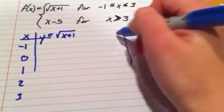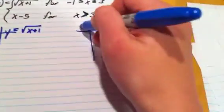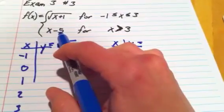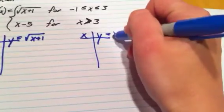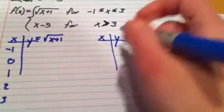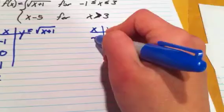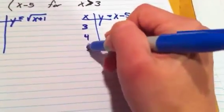And for this other guy, I'll have an x and y is going to be x minus 5 for, so y is going to be x minus 5 when x is greater than 3. So like 3, 4, 5, etc.